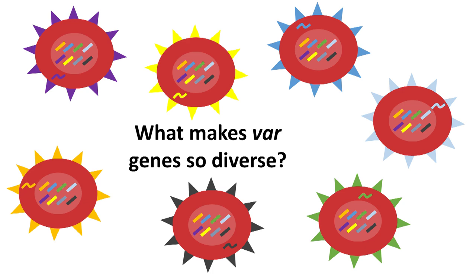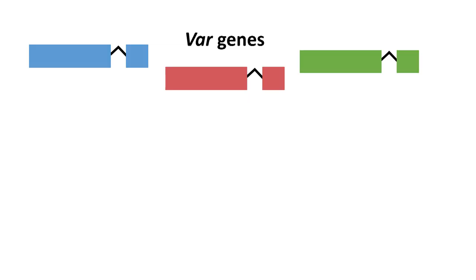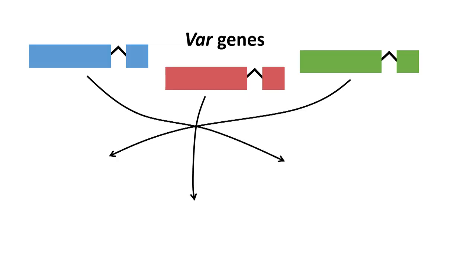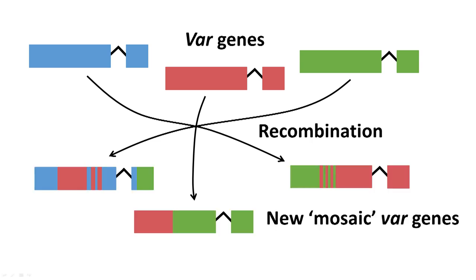We were interested in how the parasite generates so much diversity in its var gene set. We found that as the parasite divides inside human red blood cells, the var genes continuously swap genetic information between each other, and that's a process called recombination. Through this process, it's able to make new var genes by patching together pieces from existing var genes, like making a mosaic.